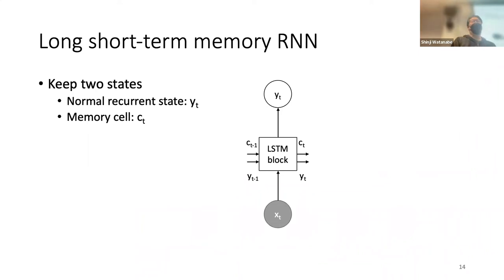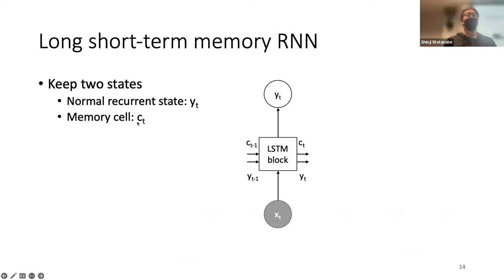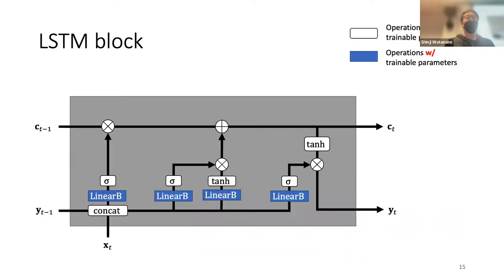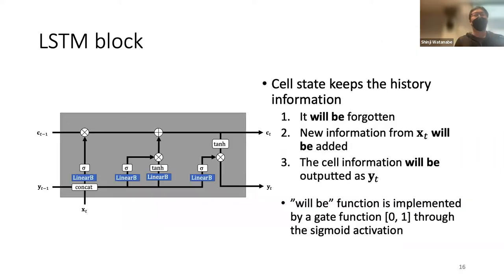LSTM has two states: one is the recurrent state and the other is the cell state. This is different from the Elman-type vanilla recurrent neural network. In the LSTM, I made a block diagram and will explain each component in detail. In general, in the LSTM, we have to understand the behavior of the cell memory, or cell state.